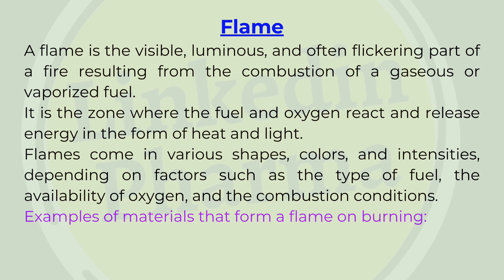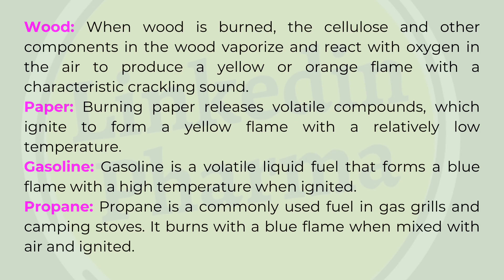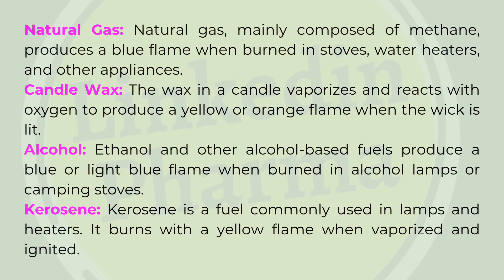Examples of materials that form a flame on burning: Wood — the cellulose and other components in the wood vaporize and react with oxygen in the air to produce a yellow or orange flame with a characteristic crackling sound. Paper — burning paper releases volatile compounds which ignite to form a yellow flame with a relatively low temperature. Gasoline — a volatile liquid fuel that forms a blue flame with a high temperature when ignited. Propane — burns with a blue flame when mixed with air and ignited. Natural gas — mainly composed of methane, produces a blue flame when burned in stoves, water heaters, and other appliances. Candle wax — vaporizes and reacts with oxygen to produce a yellow or orange flame when the wick is lit.